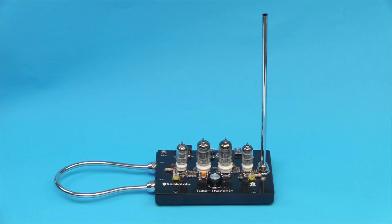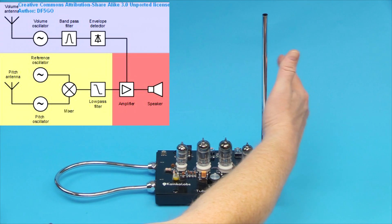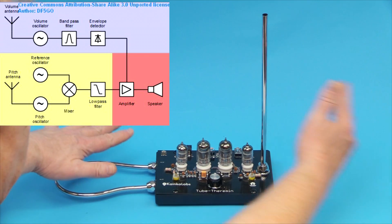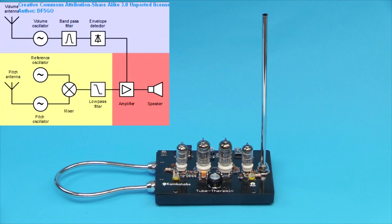And the basic working is, you can see you have two antennas. One is for the pitch. If you're nearing your hand, then the pitch goes up. And the second antenna here is for the volume. So if you're nearing your hand, the volume goes down. And thereby, with just the movement of your two hands, you control the pitch and volume of the theremin.